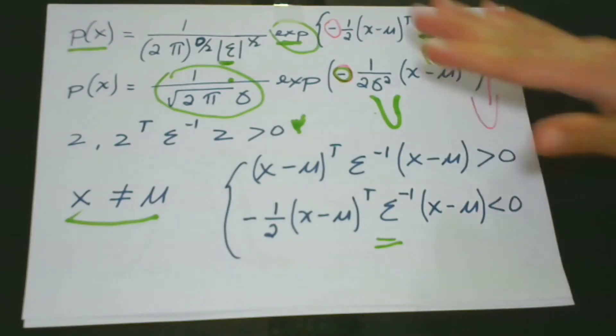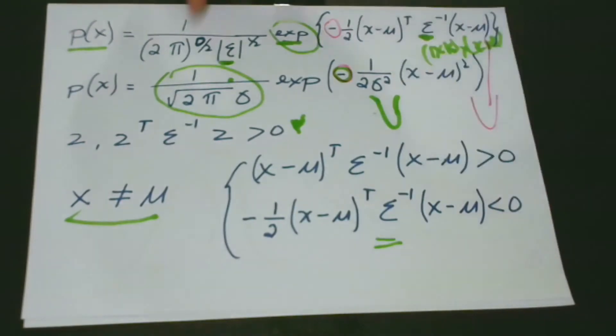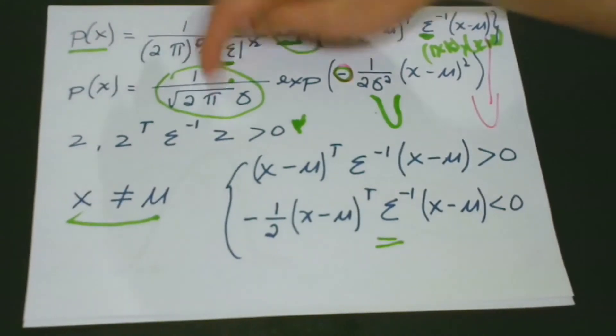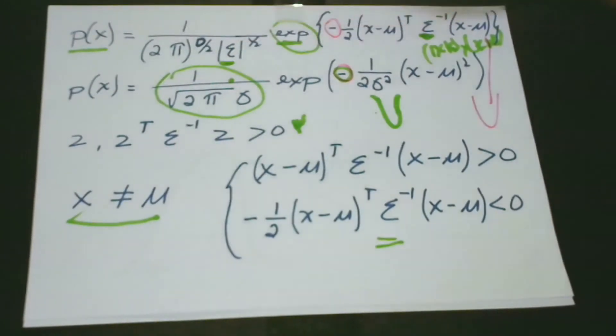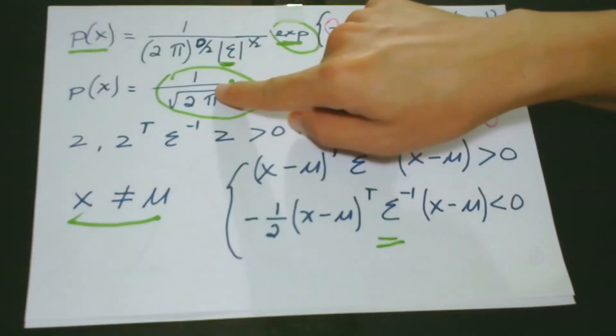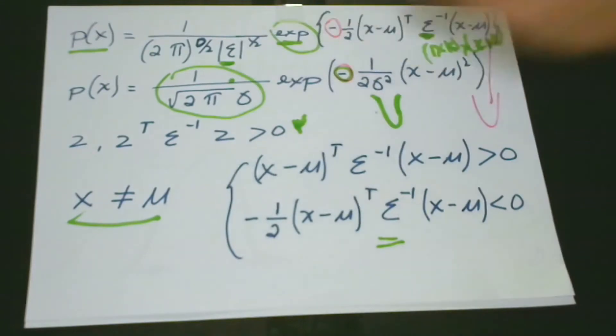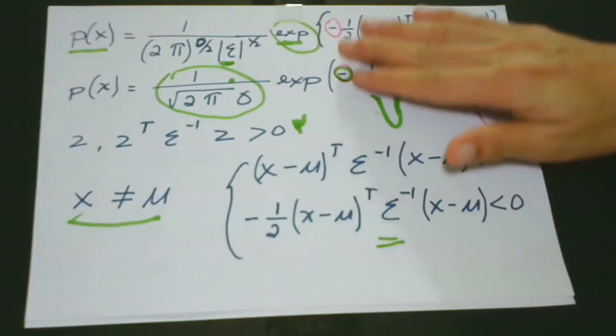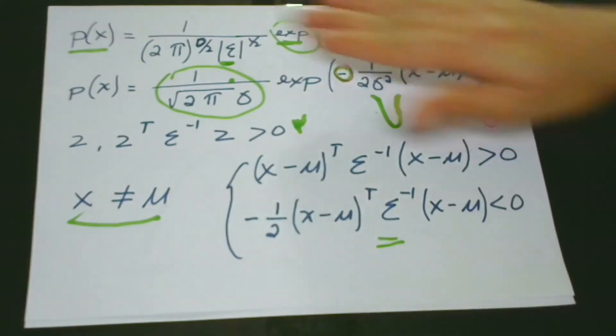Also, the coefficient in front, okay, these coefficients, so this coefficient in front here does not depend on the value of x, just like in the univariate Gaussian. So, and also, it acts as a normalization factor to ensure that it is always equal to 1.